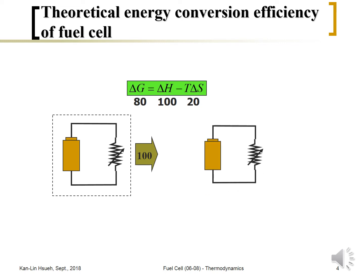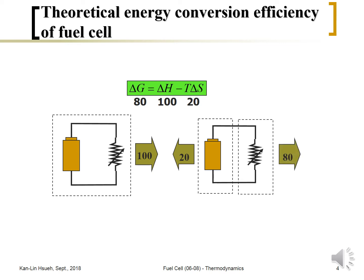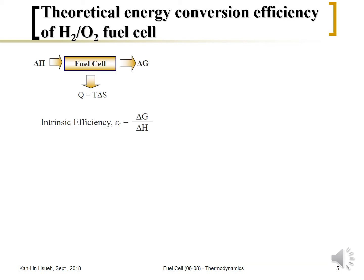With the same experiment, if almost zero current flows through the external circuit, then heat released from the battery is about 20% and electricity released through the external circuit is about 80%. That gives us the idea behind this thought experiment.